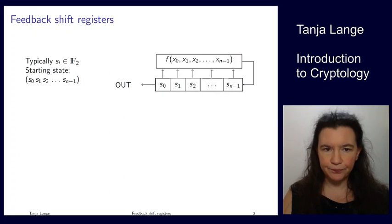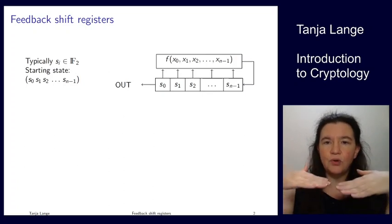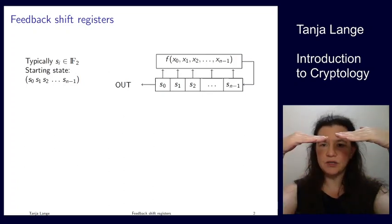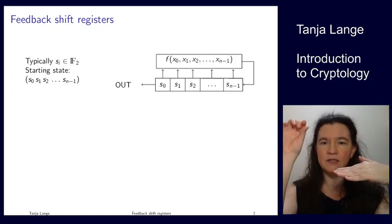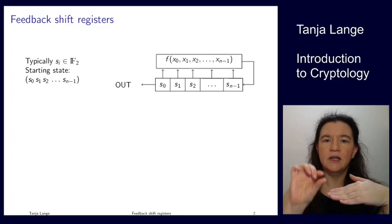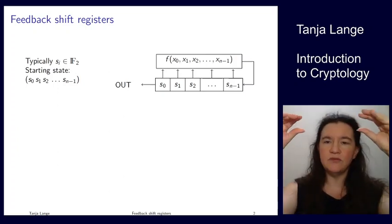So then you have a starting state with these variables in there and then the update function is that we push all these variables into the function and the function takes the variable in the first input as x0, the second one as x1, x2 and so on until xn minus 1 and computes the function of this.